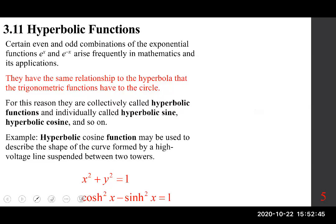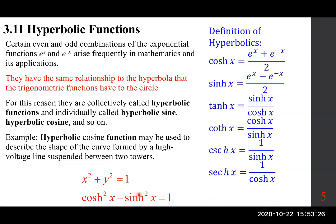Hyperbolic functions are certain even and odd combinations of the exponential functions e to the power of x and e to the power of minus x, which arise frequently in math. They have the same relationship to a hyperbola that the trigonometric functions have to the circle. Just as x squared plus y squared equals one is the unit circle, cosh squared minus sinh squared equals one is the relationship between sinh x and cosh x, giving rise to the name hyperbolic functions.